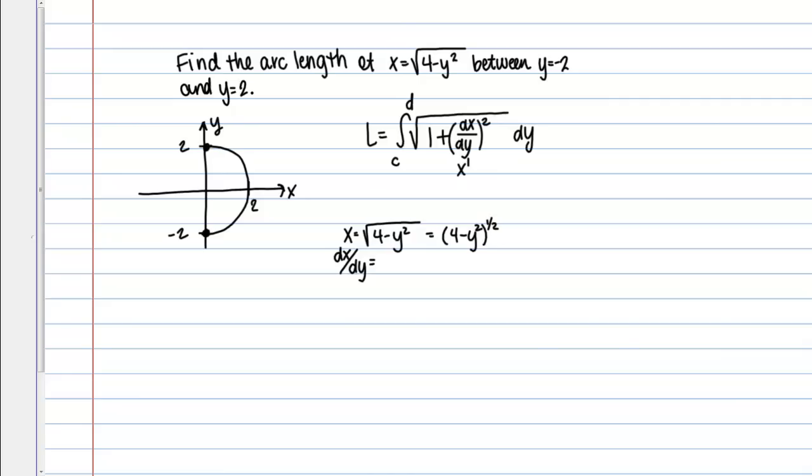But I do it in the same way, so I'm taking the derivative with respect to Y, I'm going to bring that 1/2 down, and this will now be raised to the negative 1/2 power, and chain rule says I need to multiply by negative 2Y. So then if I clean this up a little bit, I've got this 2 and 2 which should cancel, so in the end I should have negative Y over the square root of 4 minus Y squared.